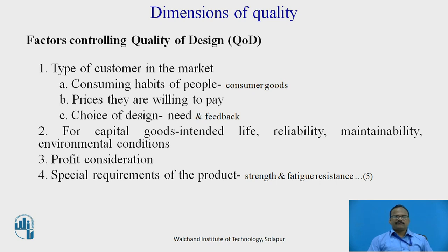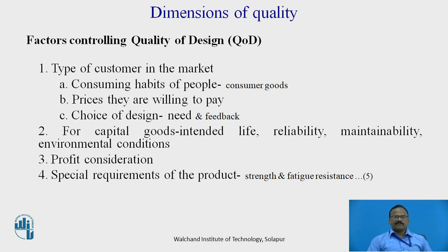Third is choice of design, which is based on the need and feedback of the customer — what the customer needs and what feedback they give for a particular product. For capital goods, good quality of design means considering intended life, reliability, maintainability, and how it behaves in different environmental conditions. Third is profit consideration — any manufacturing or service industry doing business aims to earn profit, so producing good quality product is a good quality of design. Certain products have special requirements in terms of strength and fatigue resistance. Quality of design is also about the tightness of specifications.